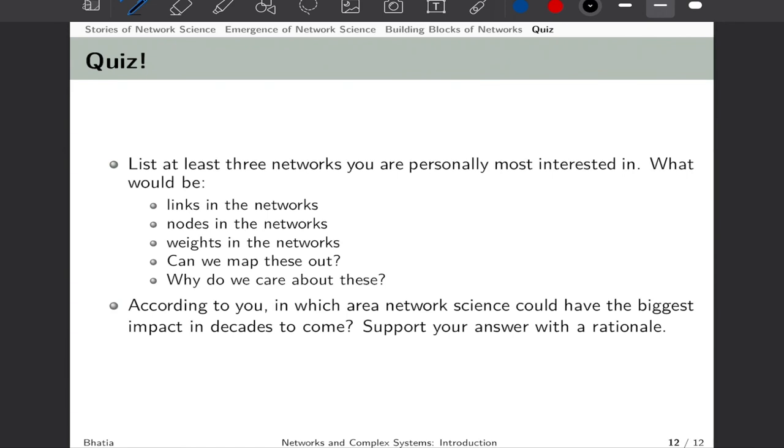Alright, time for a quiz. I have exposed you to some broad areas of network science, and I hope you will find areas of interest based on your readings. I would ask you to identify at least three networks that personally excite you the most. You have to tell me what would be links in those networks, what would be the nodes, what would be the weights, and can we really map these out? Can you plot them and draw a rough sketch on pen and paper? And finally, the most important question: why do we care about these networks? Even if we learn or solve these networks, what kind of scientific questions or questions of societal importance are we going to address?